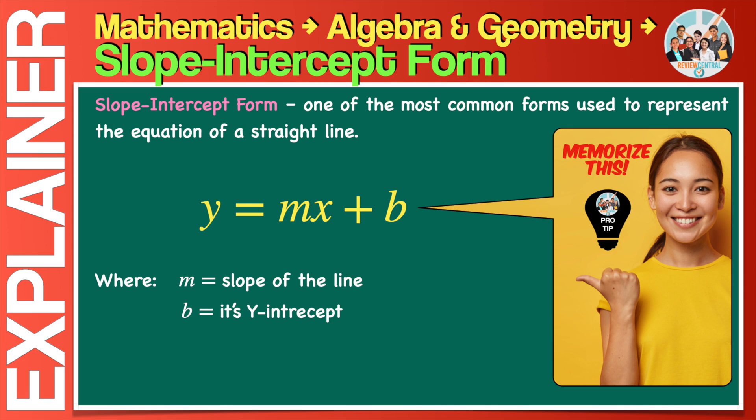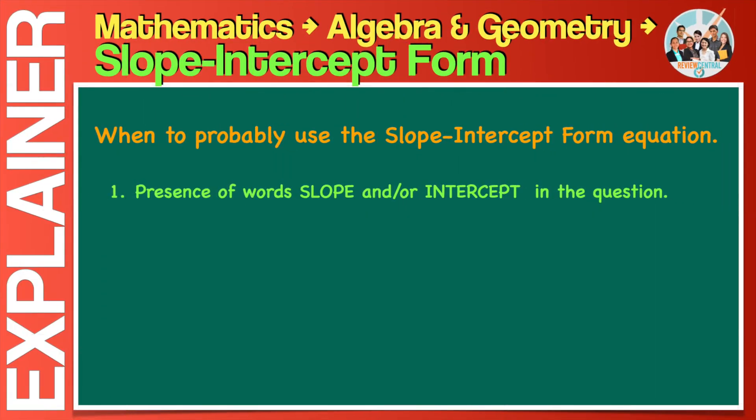There are a variety of ways that math examiners can present to you a problem involving the slope-intercept form. First, when you see the word slope and, or, intercept in the question, then you will most probably get to use the slope-intercept form to solve that problem. Not always the case as there are other forms of the line equation that may be more applicable. But in most cases you will be needing the slope-intercept form equation or formula.